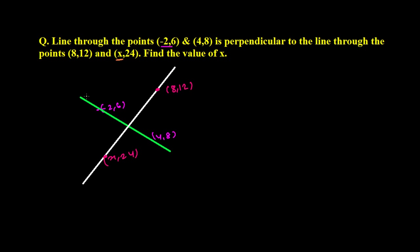So we have two lines: L1 and L2. L1 is passing through the two points (-2, 6) and (4, 8), and perpendicular to this line is L2, which passes through (8, 12) and (x, 24). We need to find the value of x. This is 90 degrees here, and it is completely based on the slope of the line.